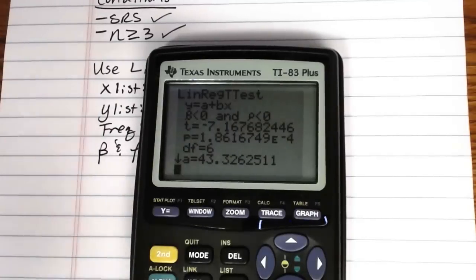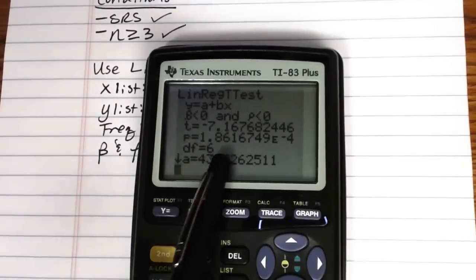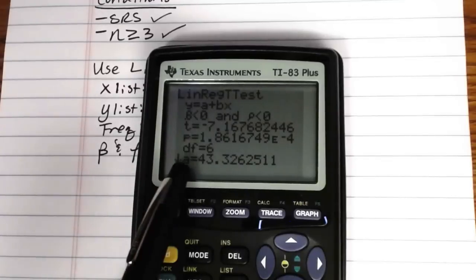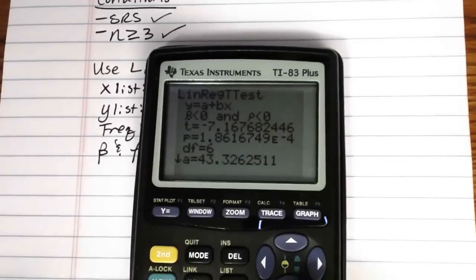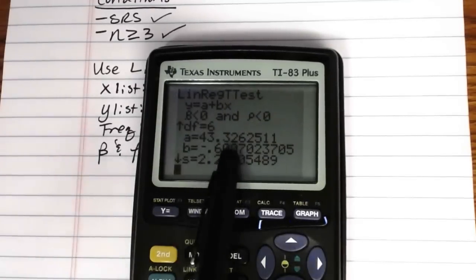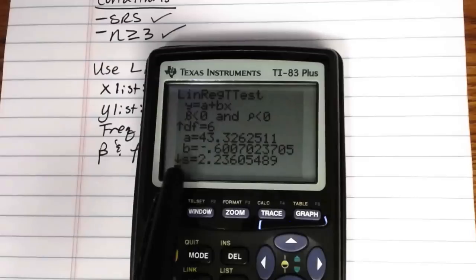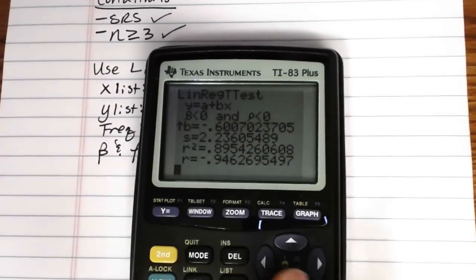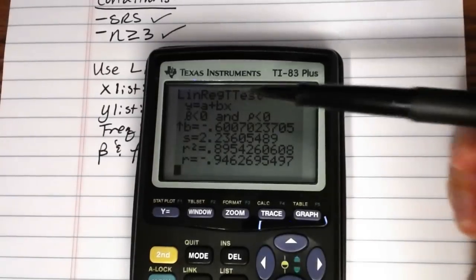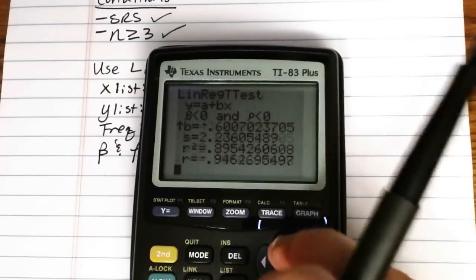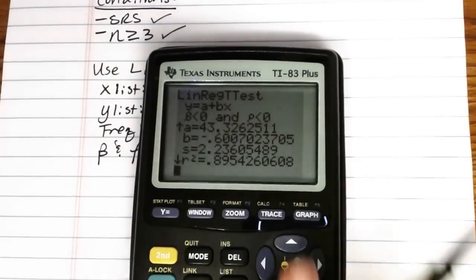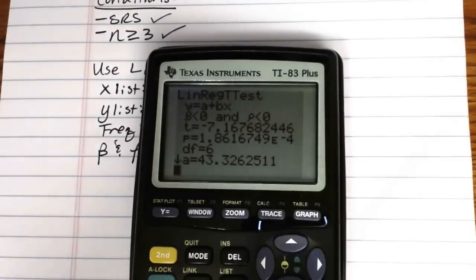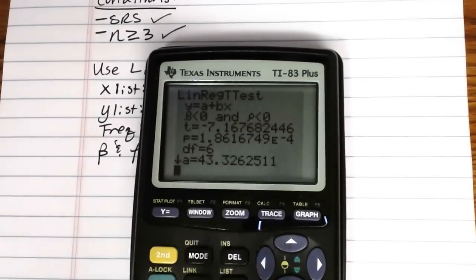We have degrees of freedom here, if we need to know our degrees of freedom. It also gives you, again, your intercept down here, your a-value, 43.33 roughly. It gives you your b, your slope, negative .60. Here's your standard deviation, your r-squared, and your r. So you actually get all of the same information here, a, b, r-squared, and r, that you get from doing a LinReg, but you also get it as part of the t-test.